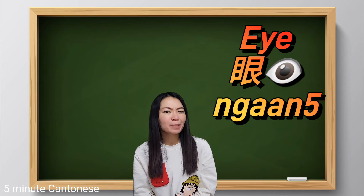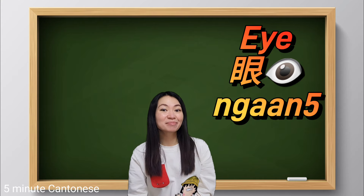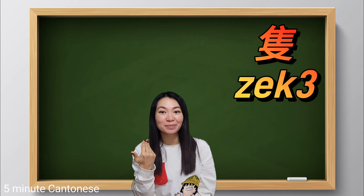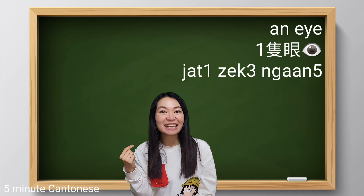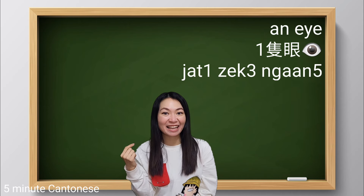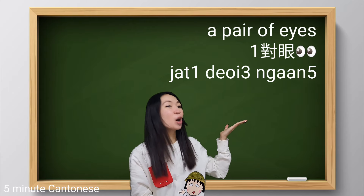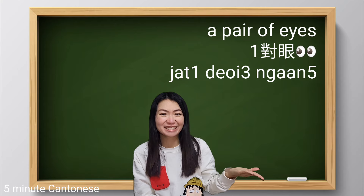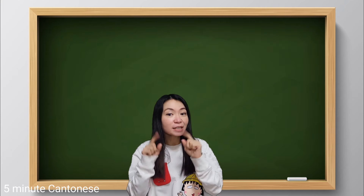First of all, remember the quantifier for 眼 (eyes). When we talk about a single one, the quantifier is 隻 — 一隻眼. How about for a pair? 對 — 一對眼. So a pair of eyes is 一對眼.